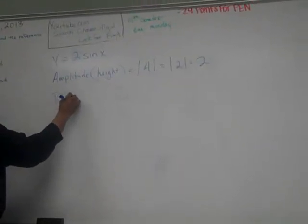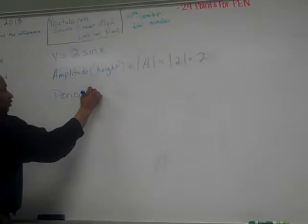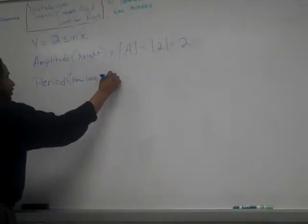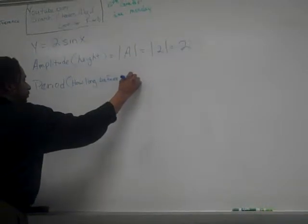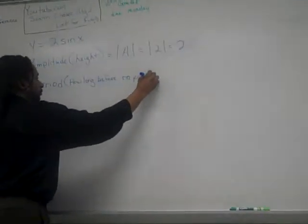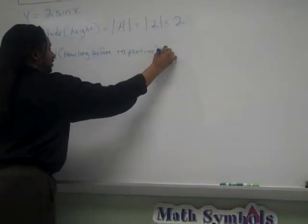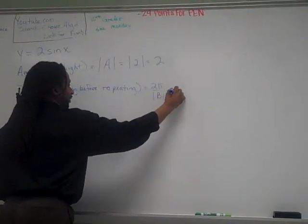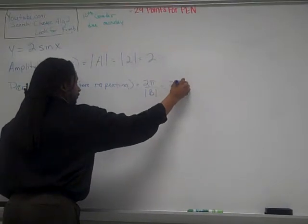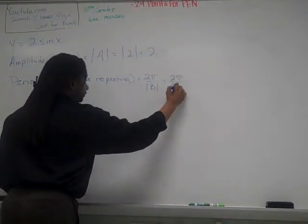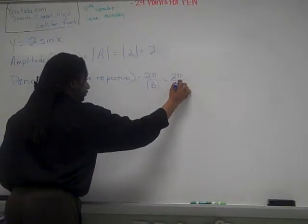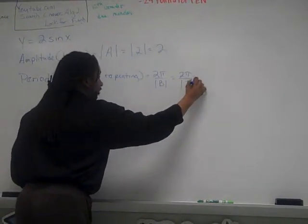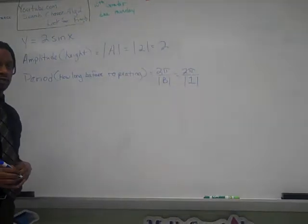My period, which is how long before repeating, equals 2π over the absolute value of B. What is B here? One. If there's nothing there, what's always in front of X? One. Therefore my period is 2π.